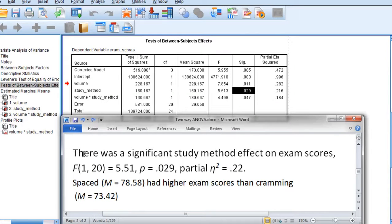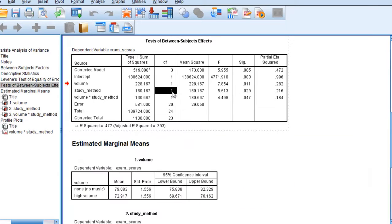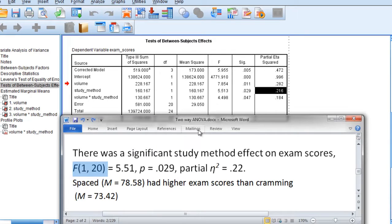There was a significant study method effect on exam scores. And then here we have F, it's the same as before, degrees of freedom of 1 for study method, 20 for error, that's equal to 5.51, our value for the F column, with a p of .029 and a partial eta-squared of .22, which you can see all right here. F of 5.51, p of .029, and partial eta-squared .22.